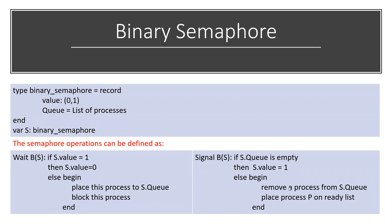Otherwise, if the queue is not empty and there are some processes waiting, we remove a process from s.queue and place that process into the critical section. Overall, we have the binary semaphore record structure with wait and signal operations. In the next tutorial we will talk about deadlock and starvation. Keep watching, goodbye.